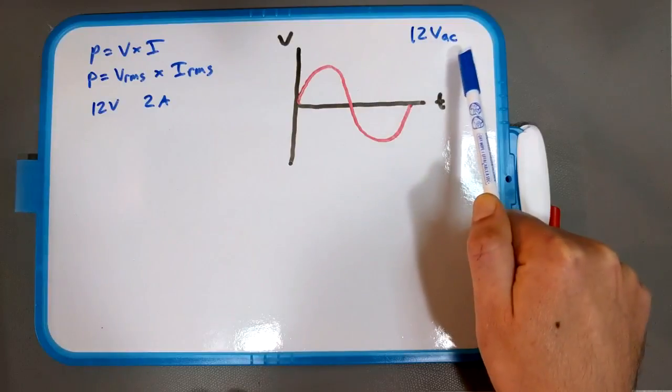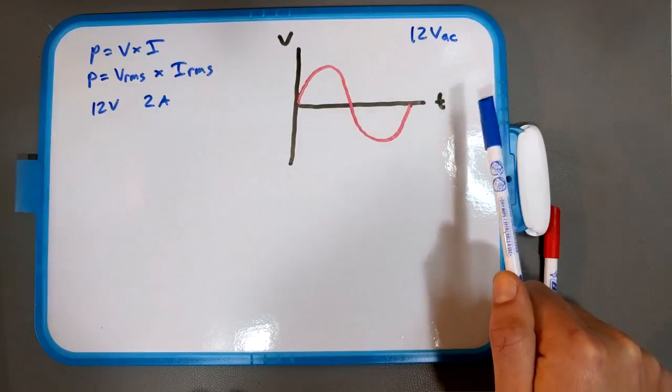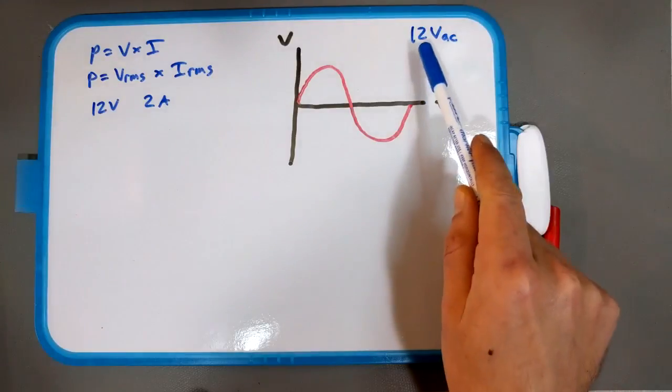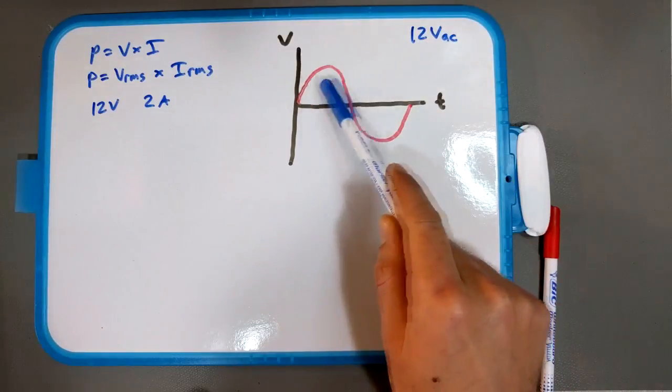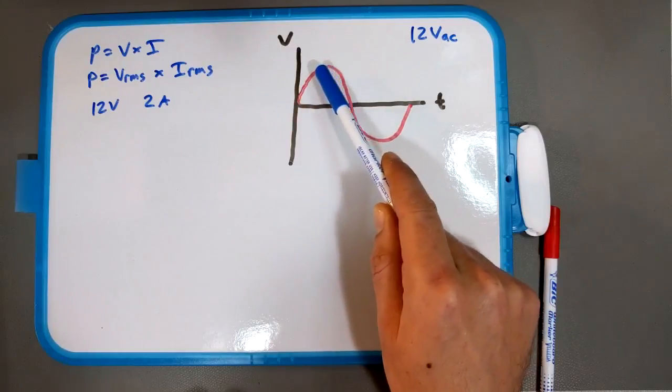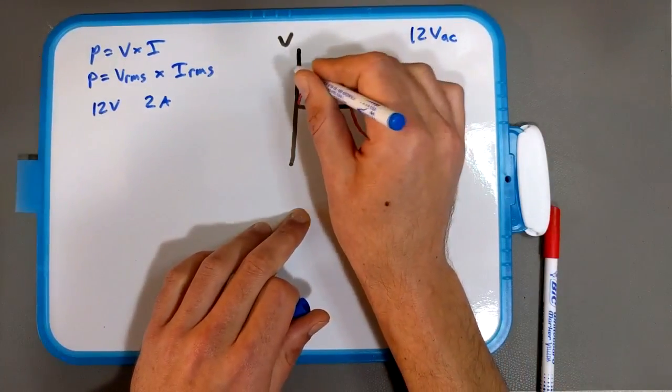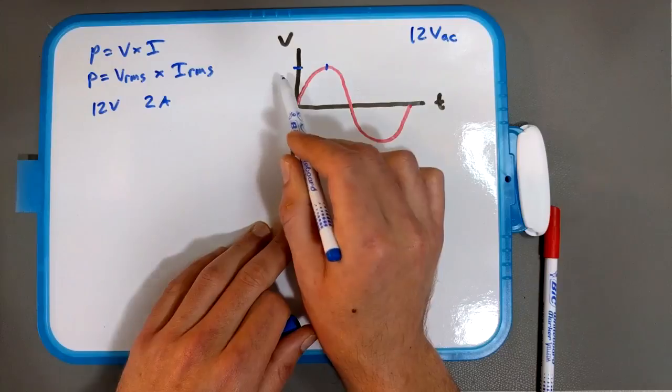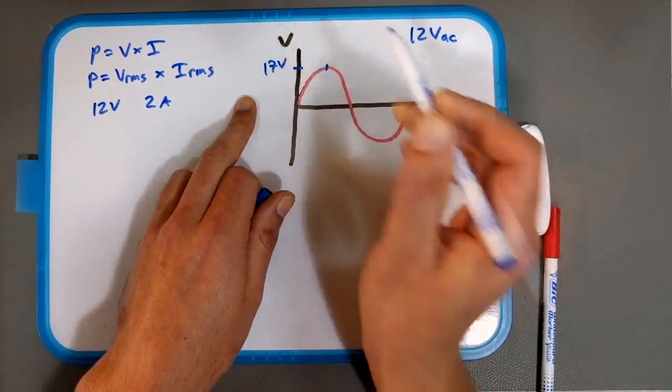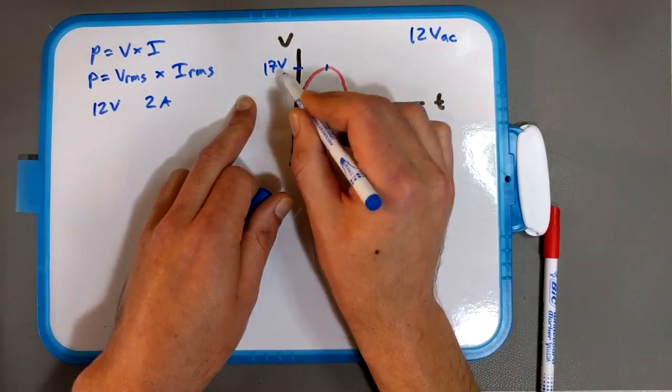is that whenever you're given a value like 12 volts AC, or 120 volts AC, or 230 volts AC, those values are actually RMS. What RMS actually means is that the value 12 volts, the peak here, the peak of this sine wave is not actually 12 volts. If it's 12 volts AC, the peak of your sine wave right here, that's not 12 volts. For 12 volts AC, the peak is actually about 17 volts.